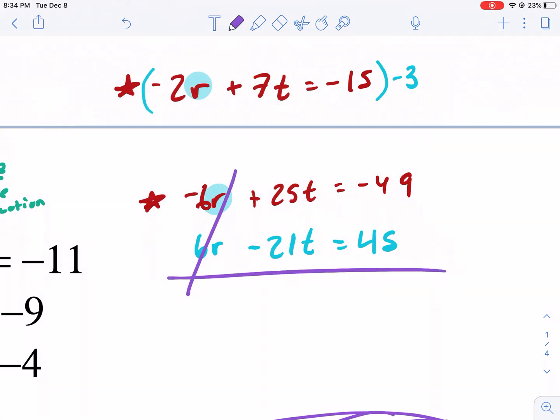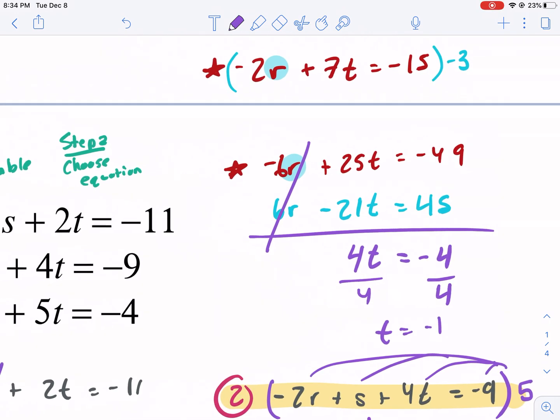And now I'm ready to add these two together. I eliminate the R. That was the whole point. We get four T equals negative four. Divide by four, divide by four. And I get T equals negative one.